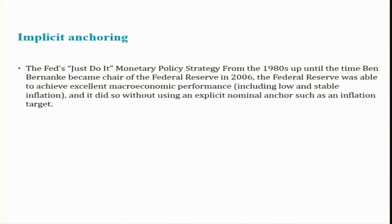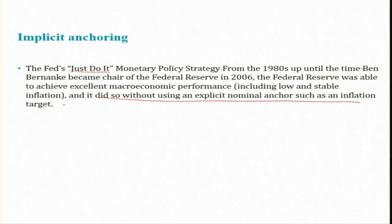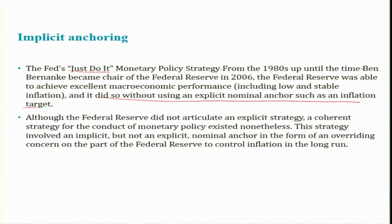One point not explained previously was the implicit anchoring — in addition to monetary aggregate targeting and Fed funds rate targeting — called the 'just do it' monetary policy strategy. From the 1980s until Ben Bernanke became chair of the Federal Reserve in 2006, the Fed was able to achieve excellent macroeconomic performance without using an explicit nominal anchor such as an inflation target or explicit interest rate targeting. Although the Federal Reserve did not articulate an explicit strategy, a coherent strategy nonetheless existed — one involving an implicit but not explicit nominal anchor in the form of an overriding concern to control inflation in the long run.